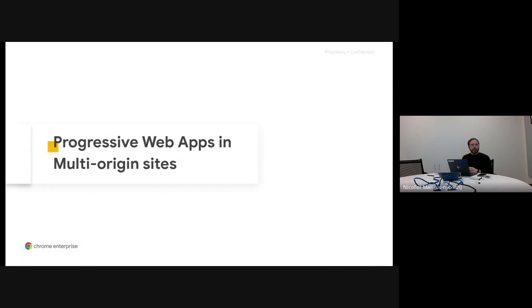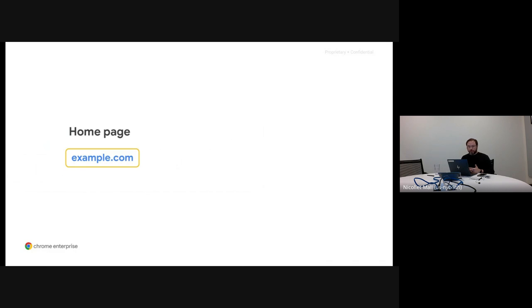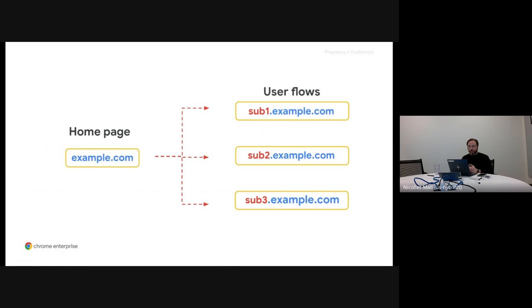Let's start with the first case, which is that you have a site consisting of multiple origins and you want to create a unified single PWA experience across all of these origins. You might have seen sites where the user starts the journey in the main origin — for example, the home page at example.com — and as they navigate, they end up visiting different subdomains during a single session.